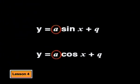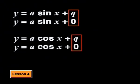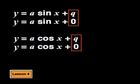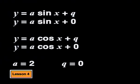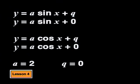First, we will look at how changing the a values changes the graph. To make our investigation easier, we will keep the q value at 0. Then we can be sure that any changes we see in the graphs are caused by the changes we make to the a value. We will begin by making a equal to 2 in both the sine and cosine functions.